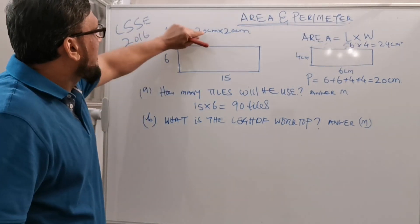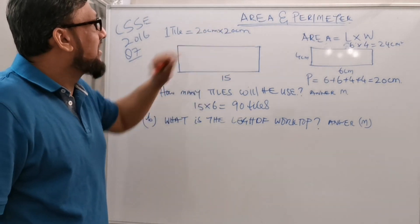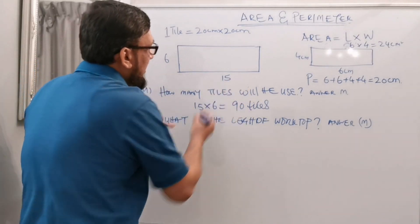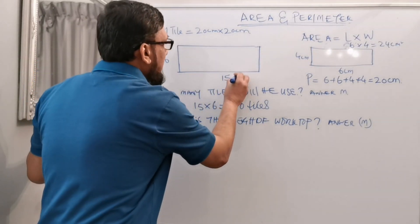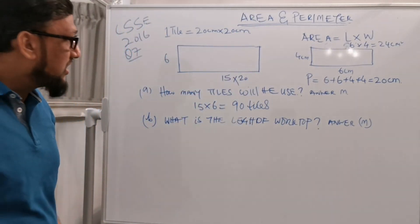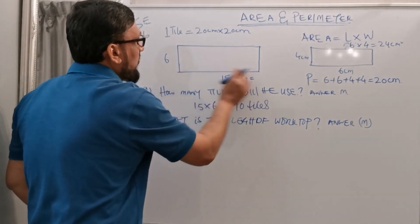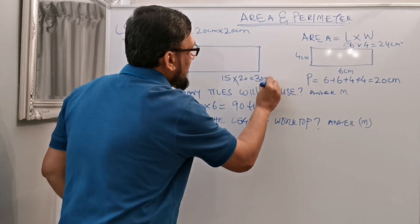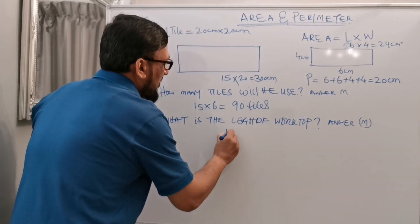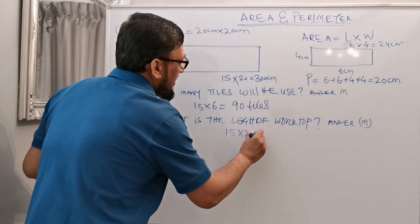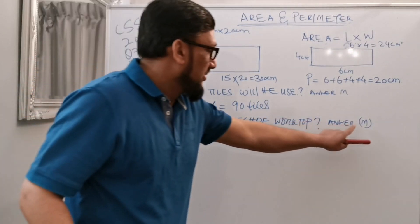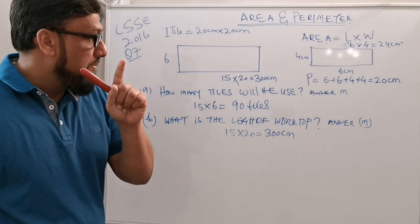As we know, one tile equals 20 centimeters by 20 centimeters. For the length, he is using 15 tiles and each tile's length is 20 centimeters. So the length of the worktop is 15 times 20, which is 300 centimeters.